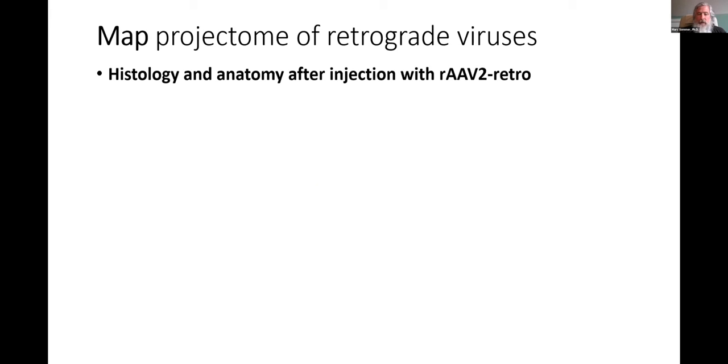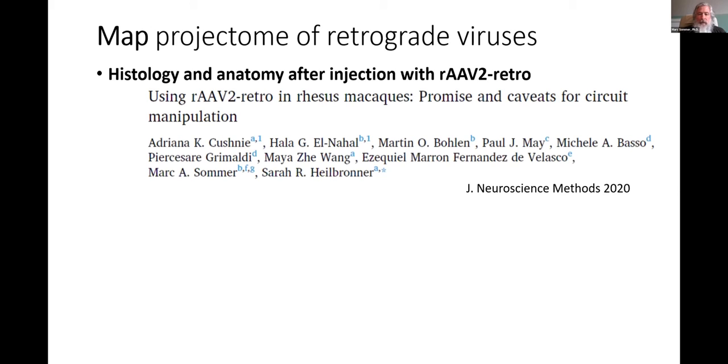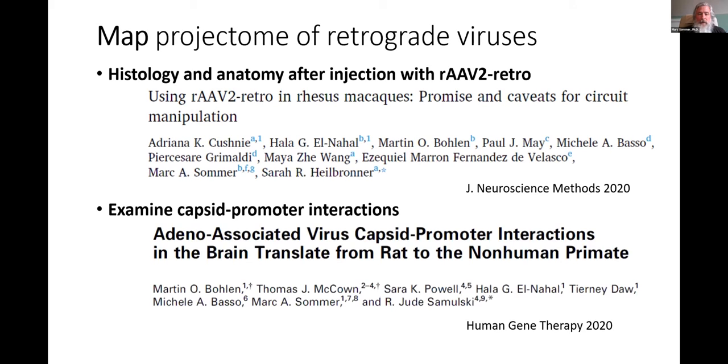To do this, we use histology and anatomy after injections with rAAV2-retro, and some of this is published. This is a collaboration with Sarah Heilbronner at University of Minnesota. So that's one way to really map things out, to inject and to look and see exactly which projection neurons were labeled after the injection. Second, we found that there are interactions between the promoters in your genetic constructs and the capsids that you use for delivery, the AAV capsids.